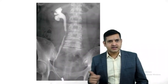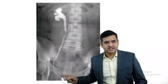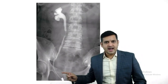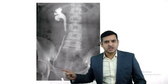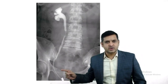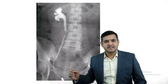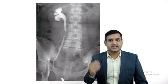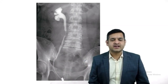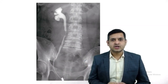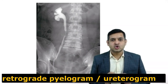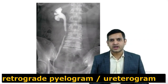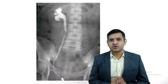However, if the catheter is seen in the lower part, through which the ureter is cannulated and the dye is injected retrogradely, you are dealing with a retrograde ureterogram or a retrograde pyelogram.